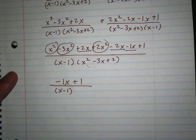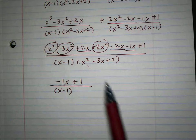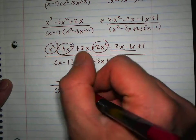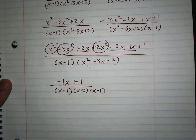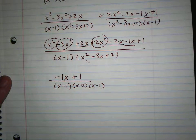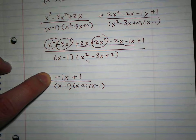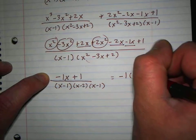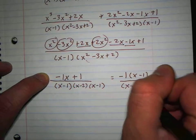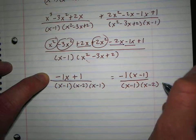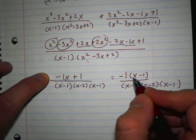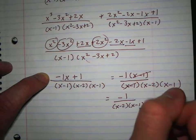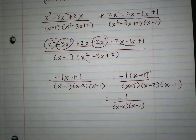I'm going to factor this. Two numbers will multiply to 2 but add up to negative 3. Wouldn't it be x minus 2, x minus 1? Is this x minus 1? Close. If I factor out a negative 1, then I get x minus 1. My x minus 1's cancel, so I should have gotten negative 1 over x minus 2, x minus 1.